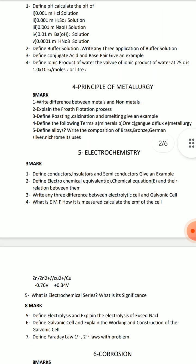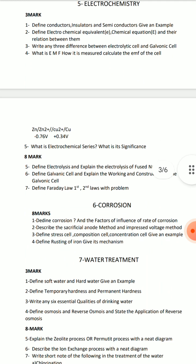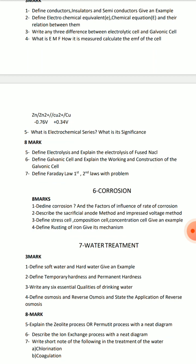The principles of metallurgy is enough. In electrochemistry, you need 8-mark short answer questions. The first is the difference between galvanic and electrolytic cells. Second, electrolysis — the process of fused NaCl. Third, the working and construction of galvanic cells. And Faraday's first and second laws with problems — very very important.